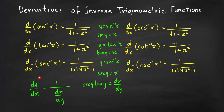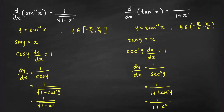You can also derive these formulas using implicit differentiation. For sine inverse x: let y equal sine inverse x, with y restricted to the interval negative pi over 2 to pi over 2. Then sin y equals x. Differentiating both sides with respect to x gives cos y times dy/dx equals 1, so dy/dx equals 1 over cos y. Because of the restriction, cos y equals the positive square root of 1 minus sin squared y, and since sin y equals x, this gives 1 over the square root of 1 minus x squared.